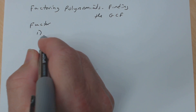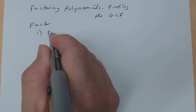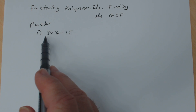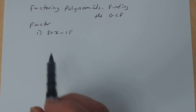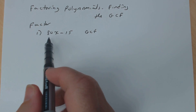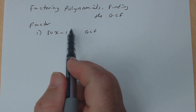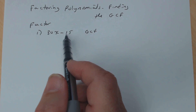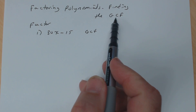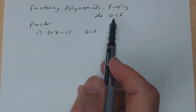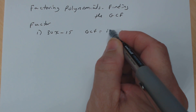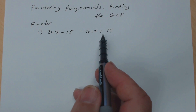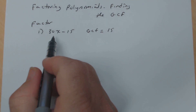For example, suppose we want to factor 30x minus 15. This polynomial has two terms: 30x and negative 15. To find the GCF, just like in the previous lesson, the GCF of 30 and negative 15 is 15 — not 3, not 5, it is 15. You must always use the largest GCF. Now let's look at the variables: I have an x in the first term but not the second, so the GCF is only 15.